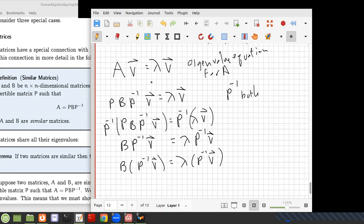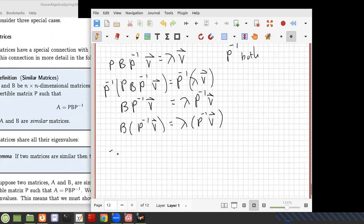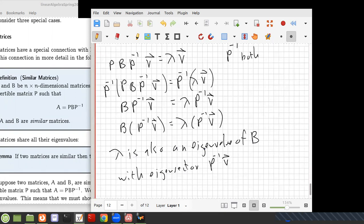Which means that if lambda is an eigenvalue of A with eigenvector V, then because A and B are similar, lambda is also an eigenvalue of B, but with a slightly different eigenvector, with eigenvector P inverse V. So the point is, similar matrices have the same eigenvalues, and the eigenvectors are related, but they're not the same.